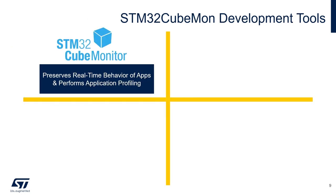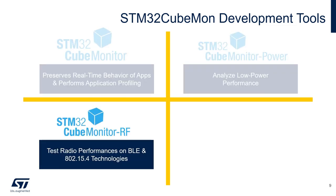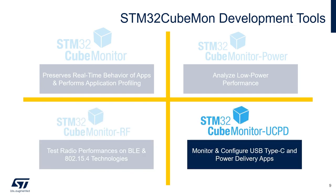The STM32 Cube Monitor tool helps to fine-tune and diagnose STM32 applications at runtime through reading and visualizing variables in real-time. Currently, there are a total of four tools in this family: STM32 Cube Monitor and three specialized versions — STM32 Cube Monitor Power, STM32 Cube Monitor RF, and STM32 Cube Monitor UCPD.